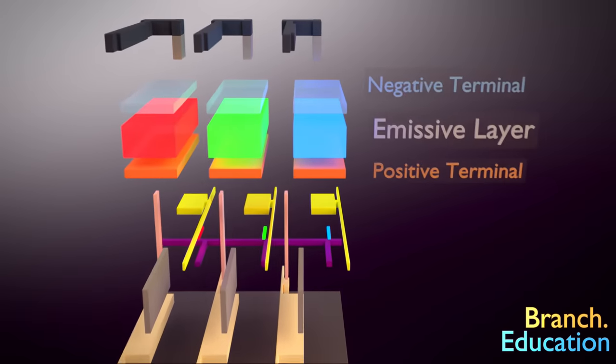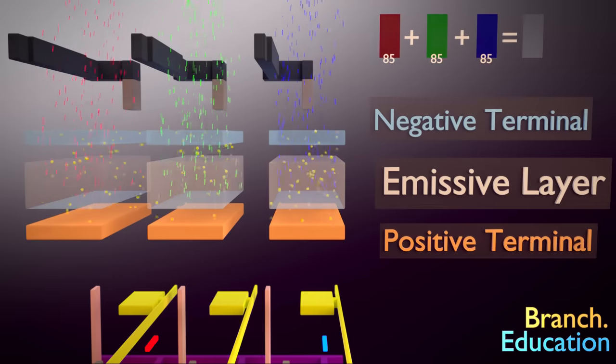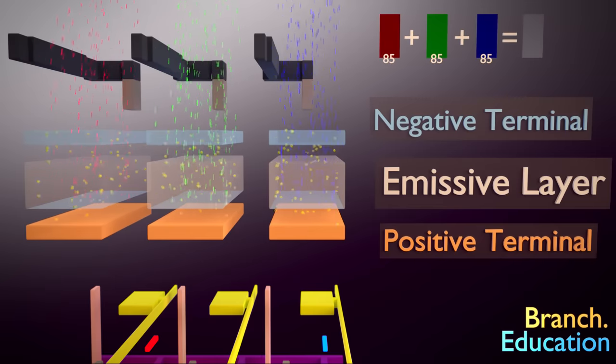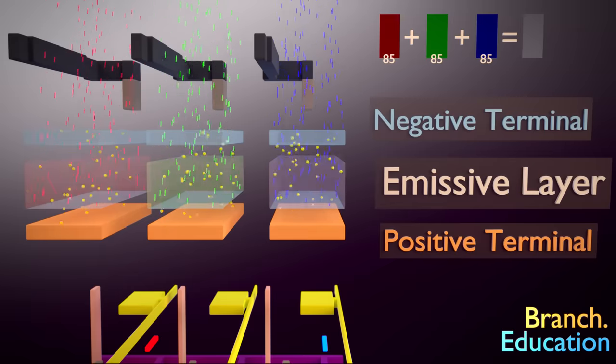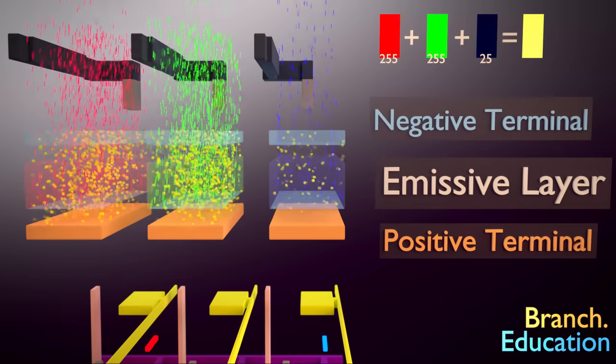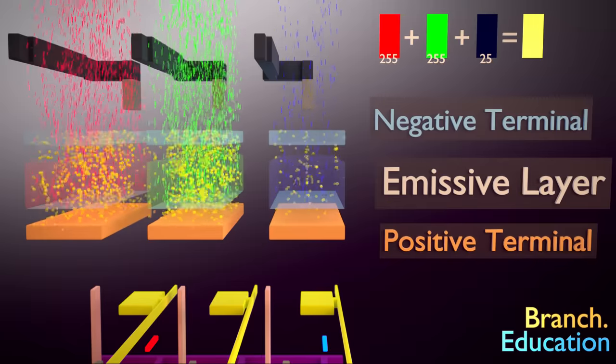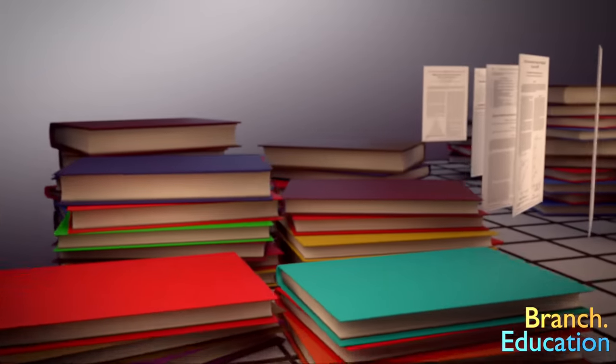Photons are produced in the subpixel by electrons that are driven from the negative to the positive terminal. When they pass through this middle layer here, called the emissive layer, photons are emitted through a release of energy. The compounds used to make up the emissive layer determines the color of the light emitted, and the intensity of this light is dependent on how many electrons pass through. This explanation is greatly simplified,